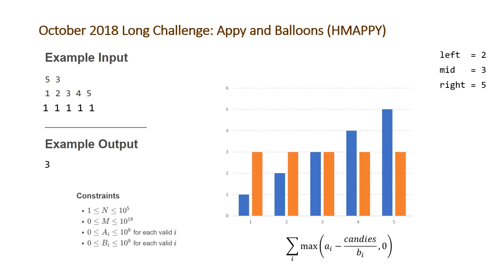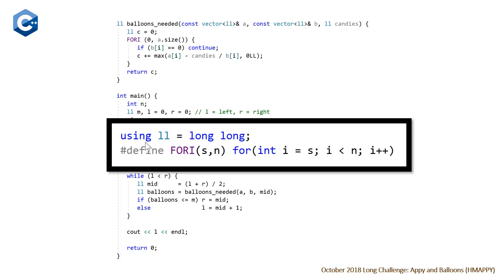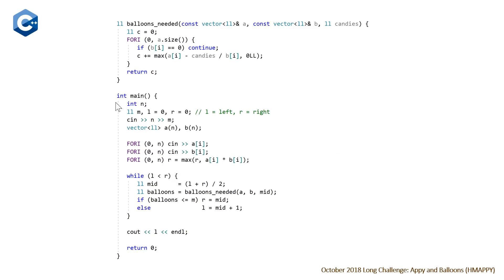Hopefully that explanation was clear — if not, walking through the code should resolve any remaining confusion. Let's take a look at the C++ solution. Throughout the solution, ll is a type alias for long long, and there's a macro for the for loop. We start at the main function.